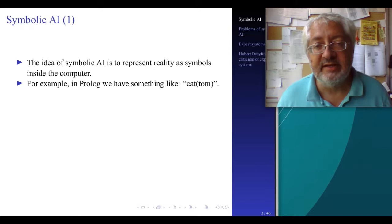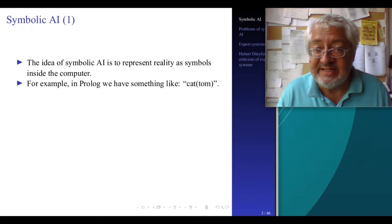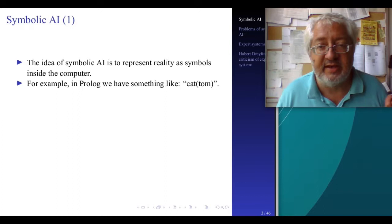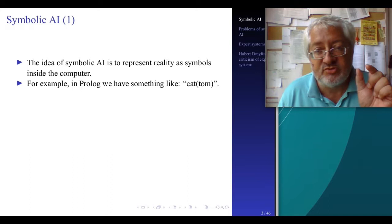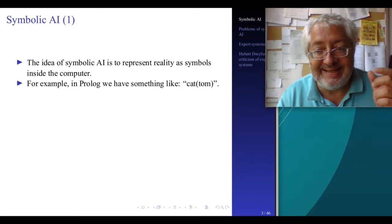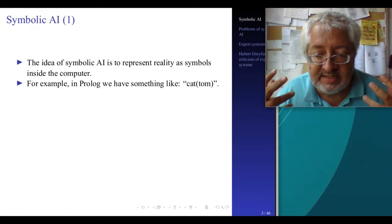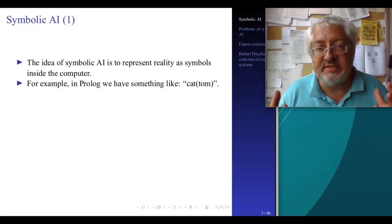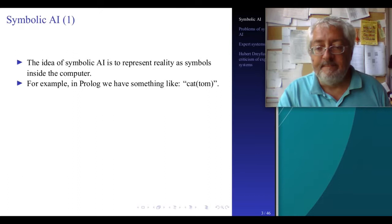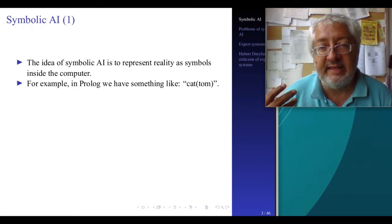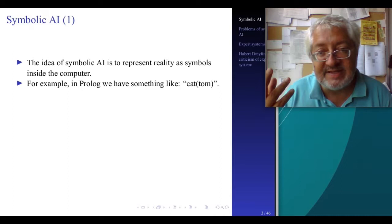Here the computer doesn't have any access to what cat means to us. It doesn't have any understanding of a cat, it doesn't have any pictures of a cat available. Instead what the Prolog system does is just to have this string of letters c-a-t, and this string of letters c-a-t is used inside the computer to represent the concept of a cat in a way that the computer can process syntactically. So when I say cat, I think of a cat. When the Prolog system sees cat, it just sees c-a-t.